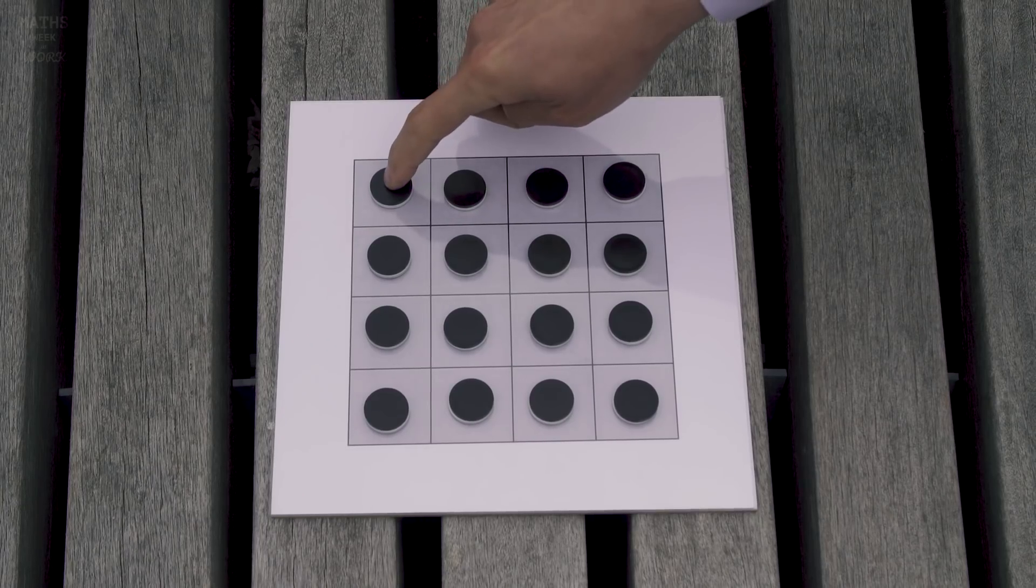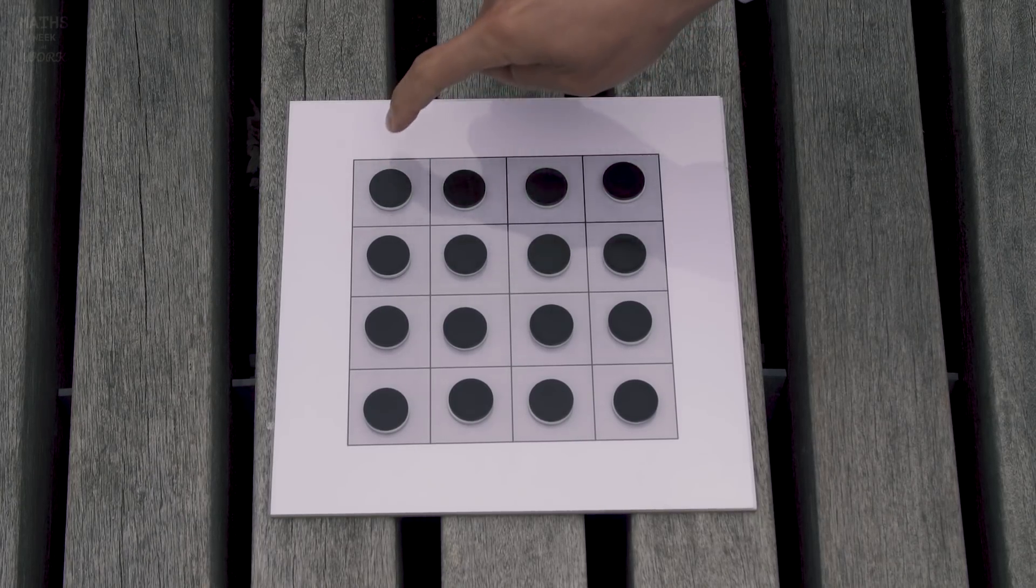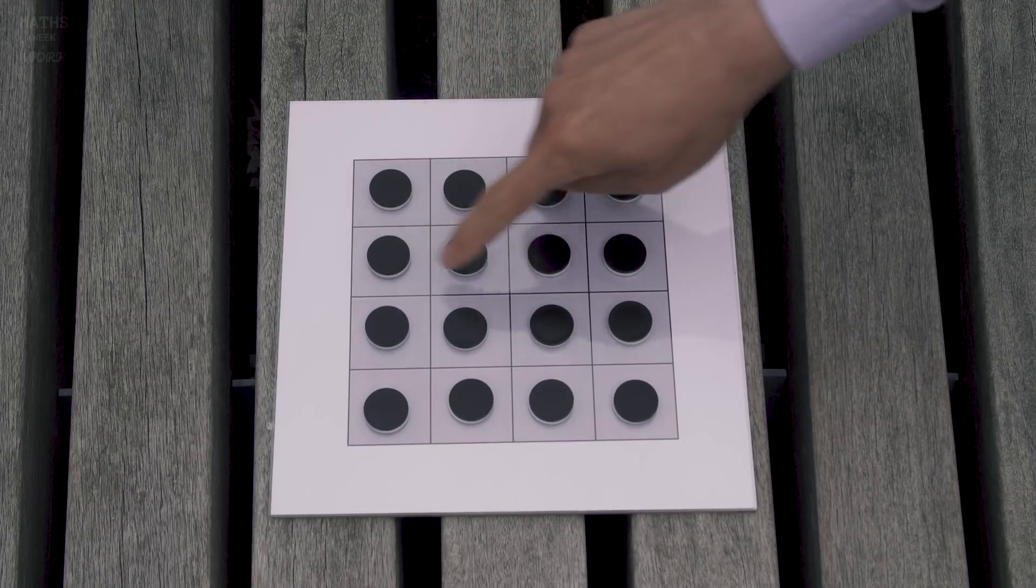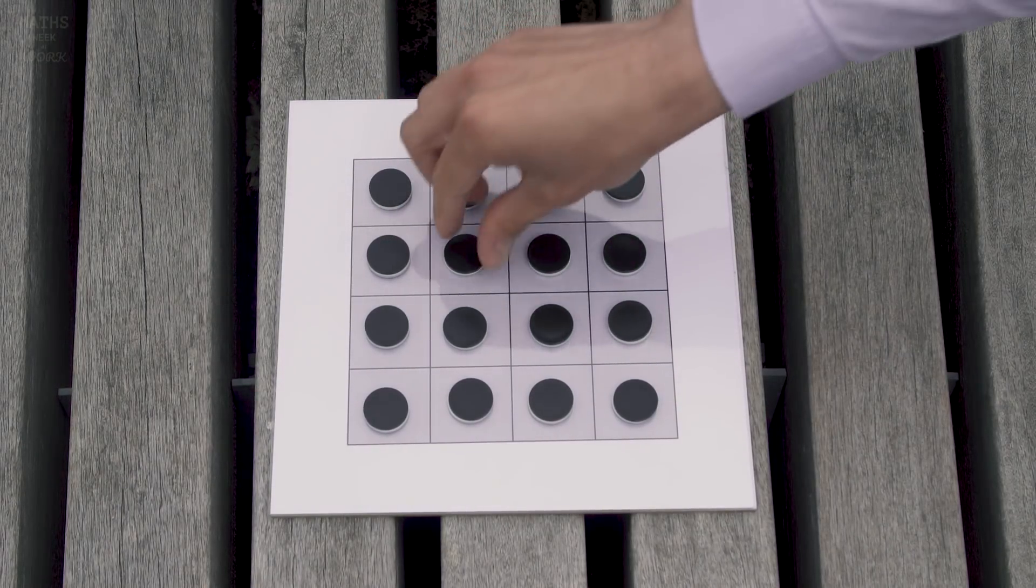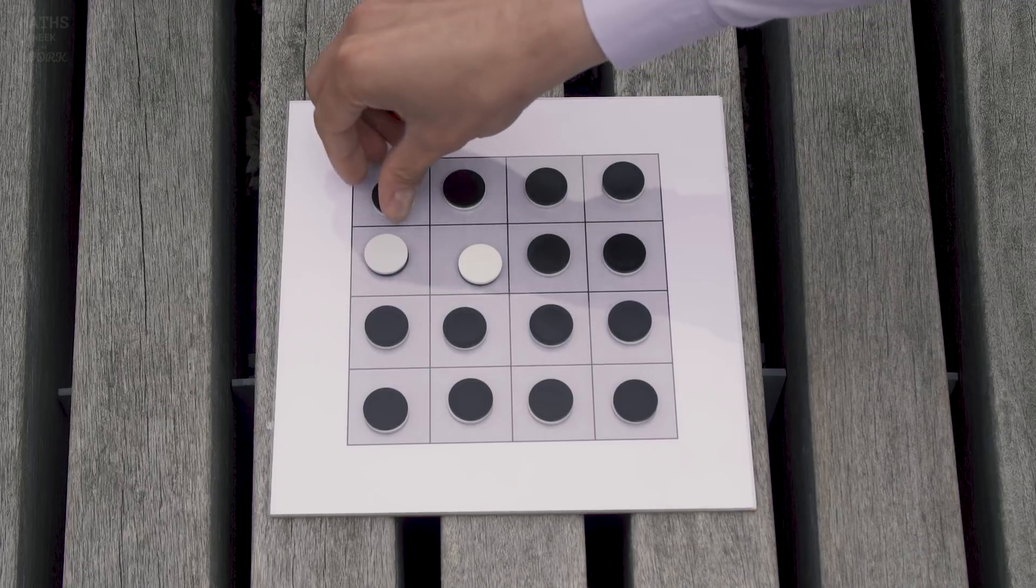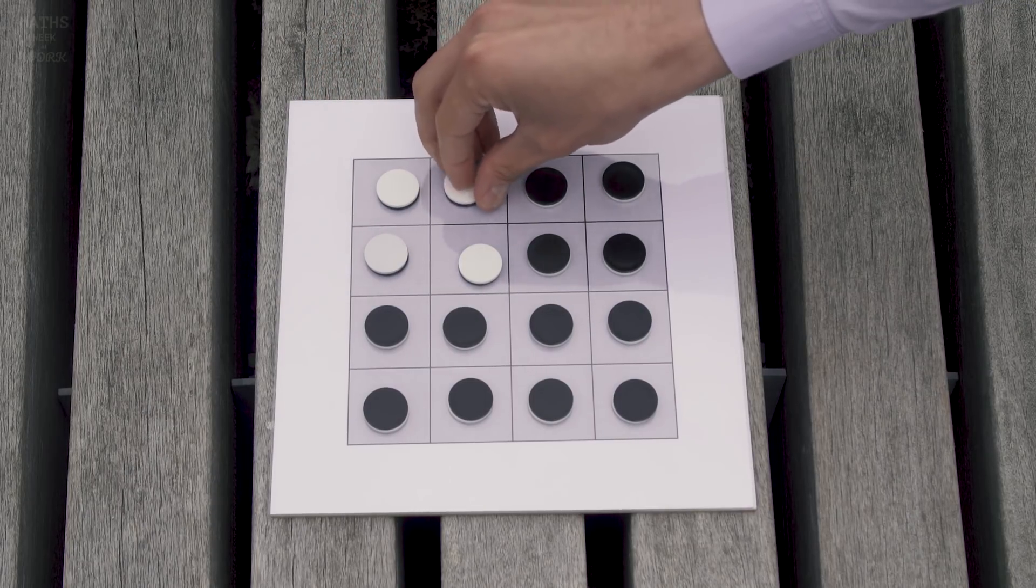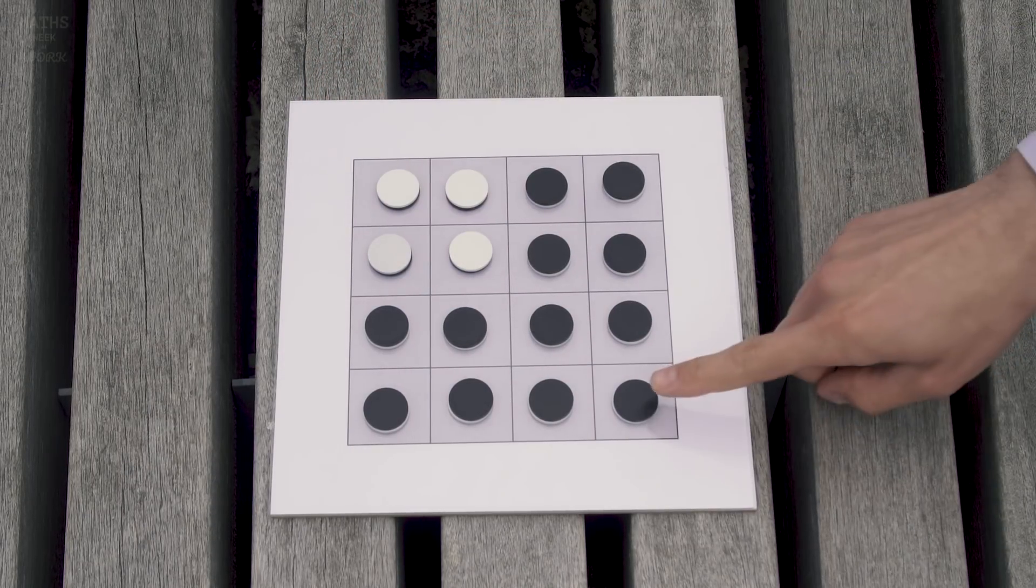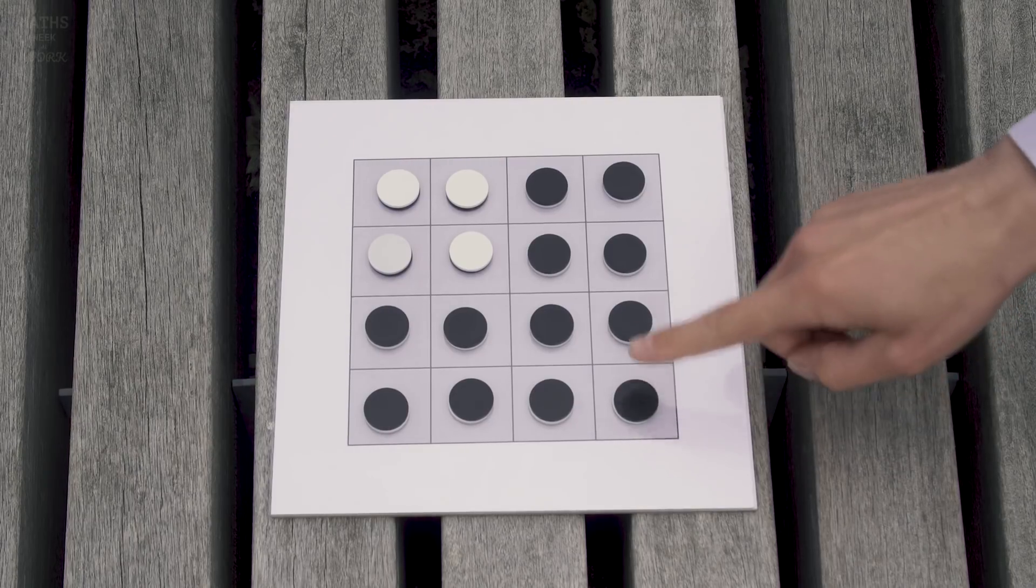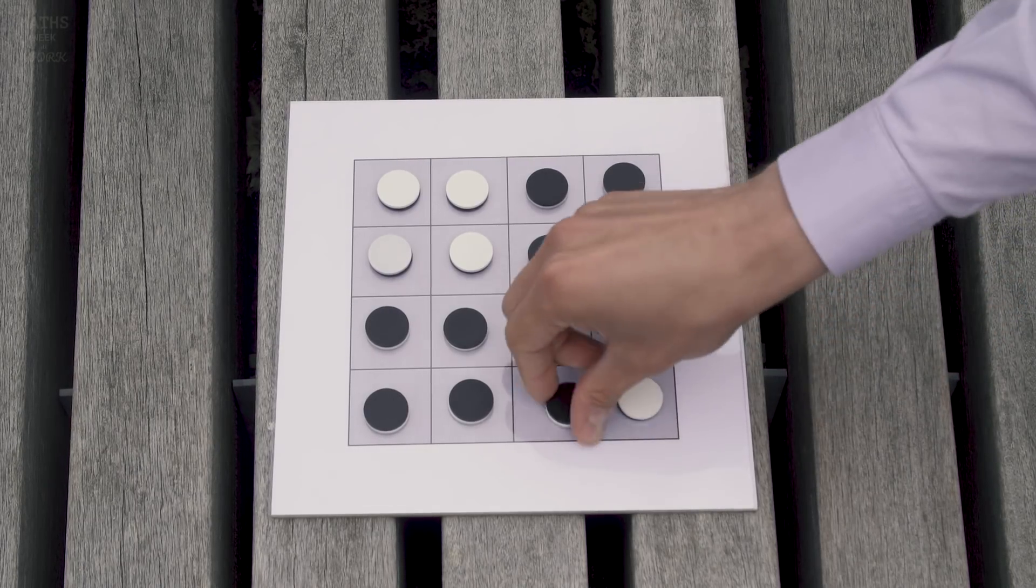This counter has to be turned over because it has to end up being white and the only 2x2 square that is in is this one here. So we must turn over this 2x2 square. Similarly this one must be turned over and that only belongs to one 2x2 square so we must turn over this one.